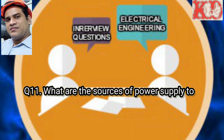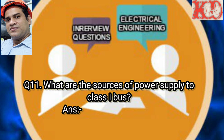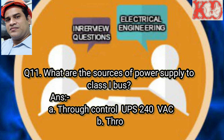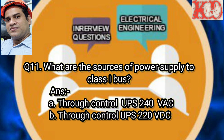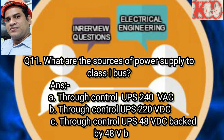Question number 11: What are the sources of power supply to the class 1 bus? Answer: First, through control UPS 240 volt AC; second, through control UPS backed by 220 volt DC batteries; third, through control UPS backed by 480 volt DC batteries.